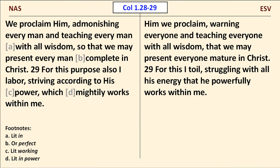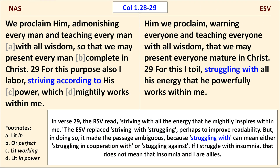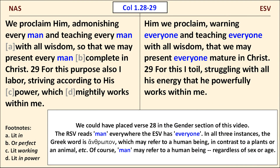Next, we move to Colossians chapter 1, verse 29. Here, I want to point out what I see as an ambiguity in the ESV. In verse 29, the RSV read striving with all the energy that he mightily inspires within me. The ESV replaced striving with struggling, perhaps to improve readability. But in doing so, it made the passage ambiguous, because struggling with can mean either struggling in cooperation with or struggling against — if I struggle with insomnia, that doesn't mean that insomnia and I are allies. Also, the NAS reads man, the ESV person, as we've come to expect.